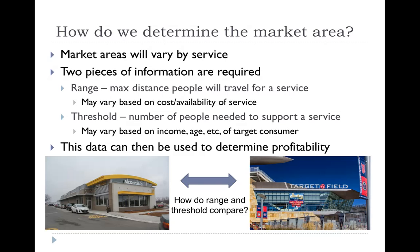People are willing to travel further for services that are rare. In North and South Dakota there is no baseball team, so people travel to the Twin Cities for a game. But there is a McDonald's in North and South Dakota, so people are not willing to travel as far for one.